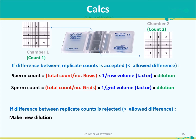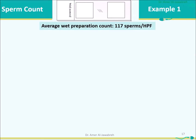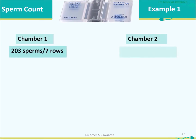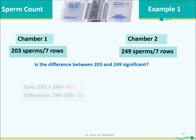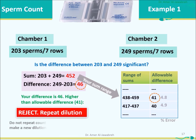Example 1 — Normal count (greater than 20 million per mL). Average wet prep count: 117 sperms per high power field; recommended dilution is 1:20. Chamber 1 count: 203 sperms per 7 rows. Chamber 2 count: 249 sperms per 7 rows. Is the difference significant? Sum = 452, which falls in the range 438–459. Difference = 46, which is higher than the allowable difference of 41 — so reject the count and repeat with a new dilution.